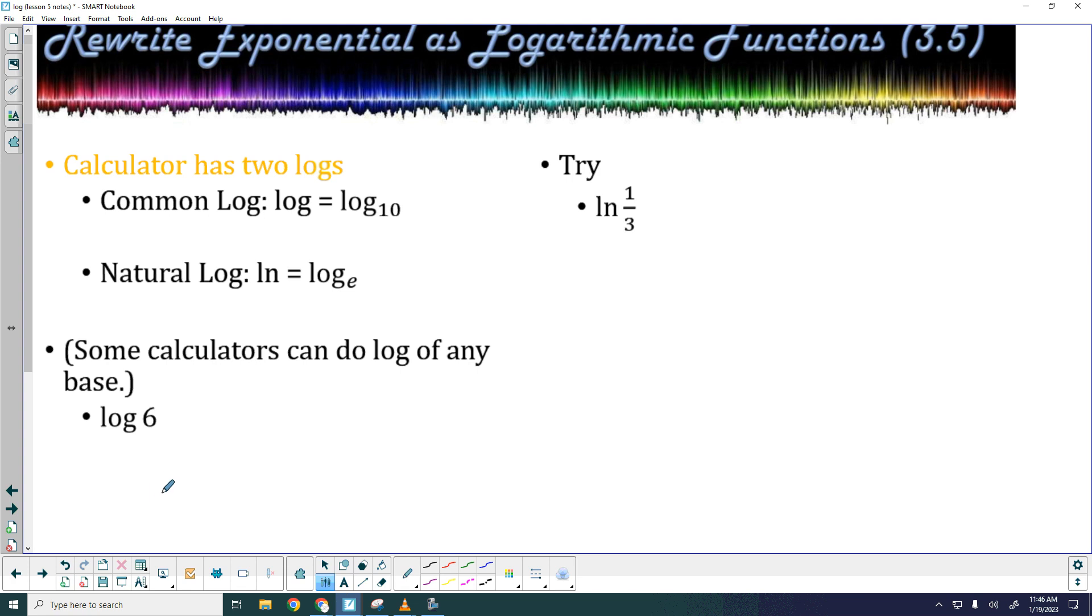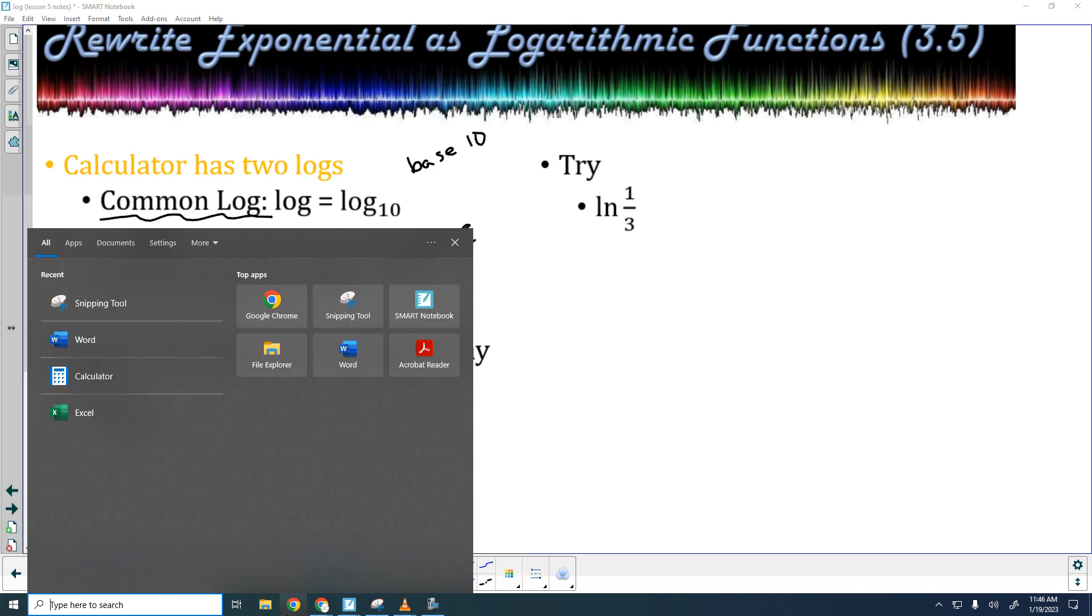Your calculator has two ways to do log. The first one is the common log, and that is where your base is 10. And usually, you just write log. If you don't see a base written right here, a little subscript, it's understood to be 10. If you have natural log, that just means your base is the number E. And that is going to be written as LN, natural log.